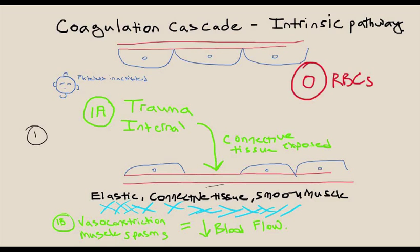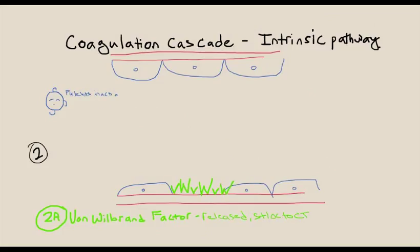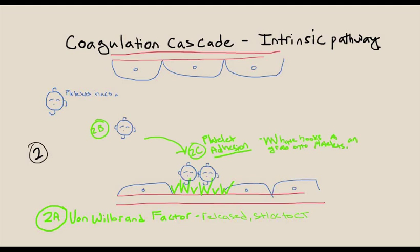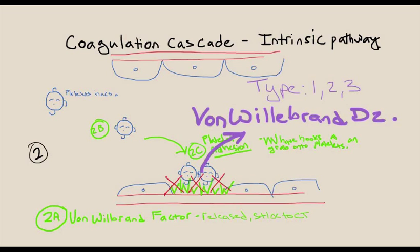When endothelial tissue is exposed, the surrounding tissue releases von Willebrand factor, a sticky material that attaches to connective tissue with special hooks to catch and hold inactivated platelets. The most common hereditary bleeding disorder is von Willebrand disease. There are three types depending on how much your body produces, which can cause problems as we are exposed to thousands of microtrauma and microthrombi daily.